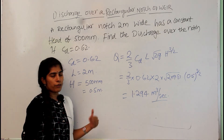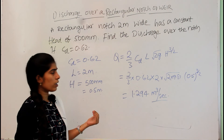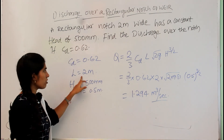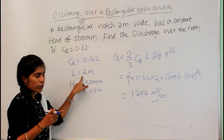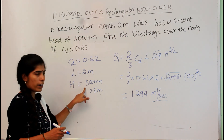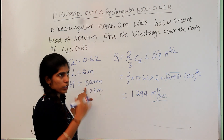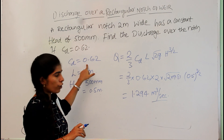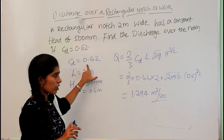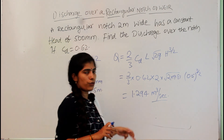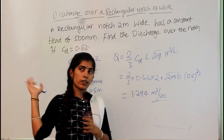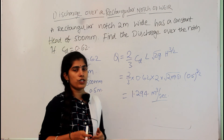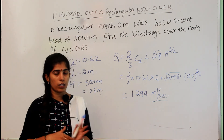This is how we find the discharge from a rectangular notch or rectangular weir using these parameters. If we know the dimensions of the weir or notch, the head flowing over it, and the coefficient of discharge, we can easily calculate the discharge for any channel section using this formula.